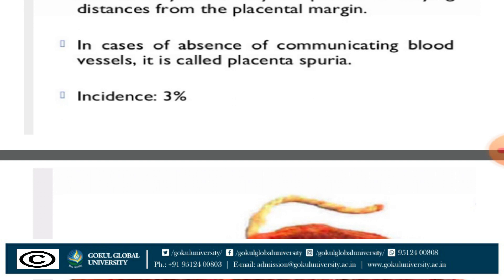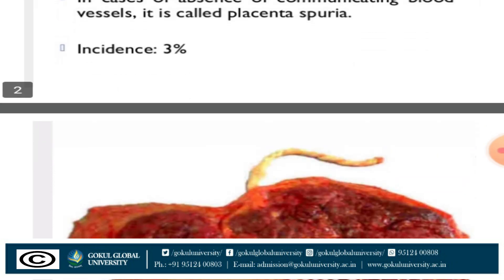Normally in the placenta, there are 15 to 20 cotyledons or lobes present. In this type of condition, one of those lobes is distantly placed at the margin of the placenta. In the case of absence of communicating blood vessels, it is called placenta spuria. Between the varying lobe and the whole placenta, communicating blood vessels are present. If there are no communicating blood vessels, it is called placenta spuria.